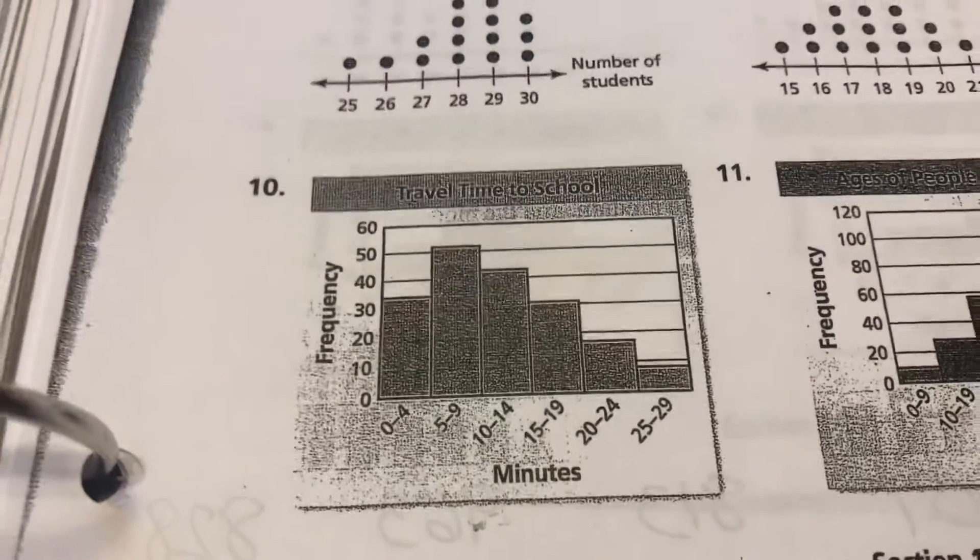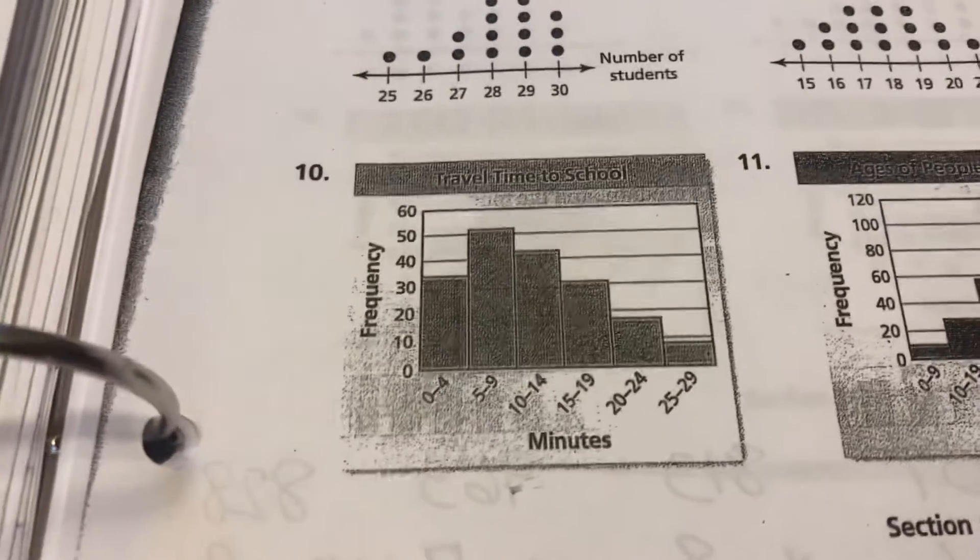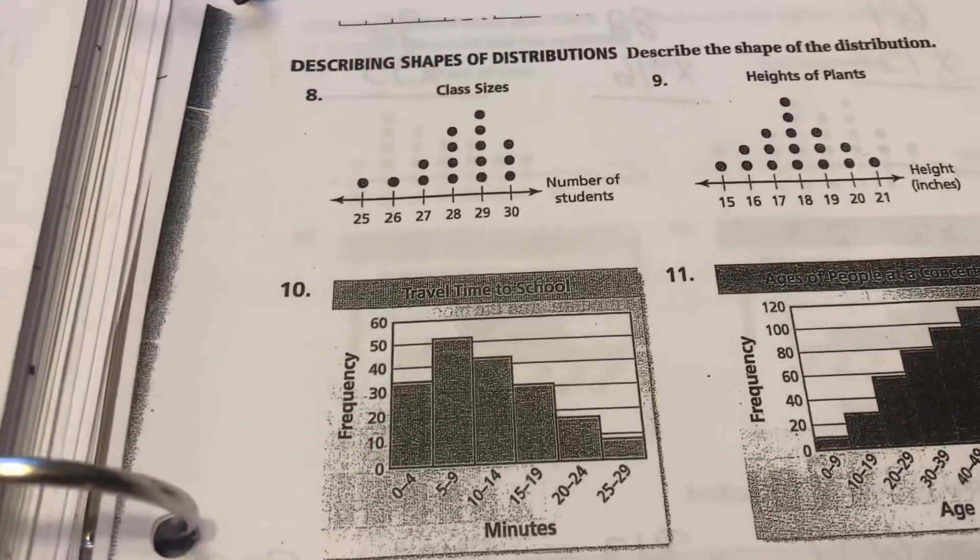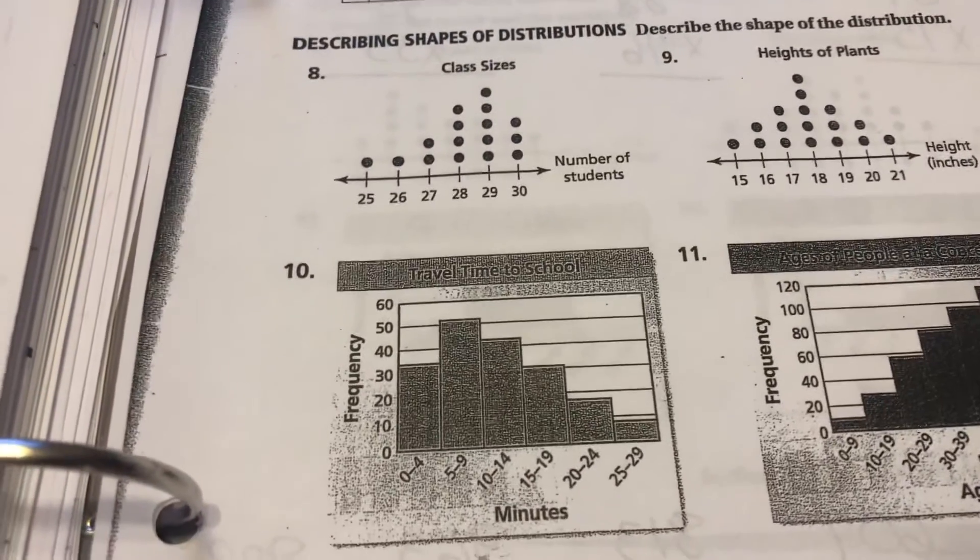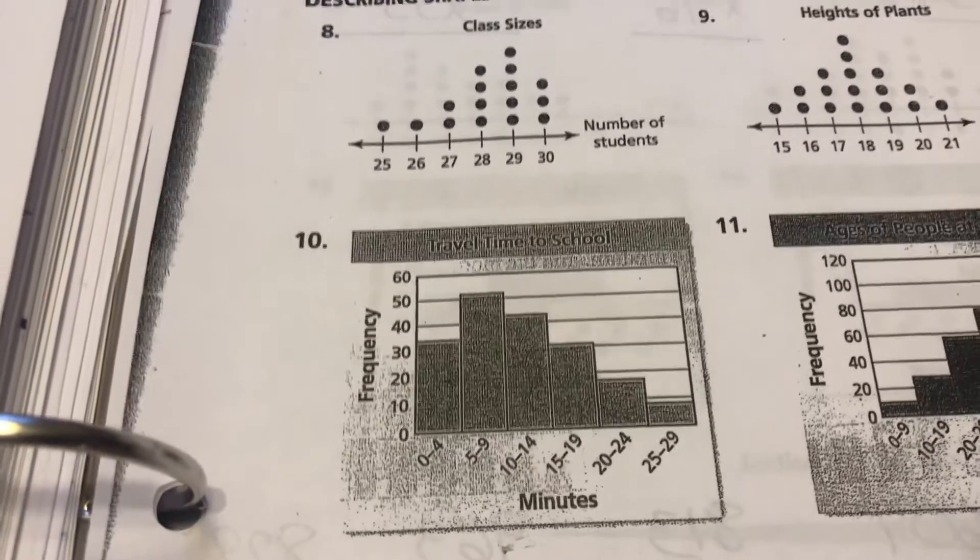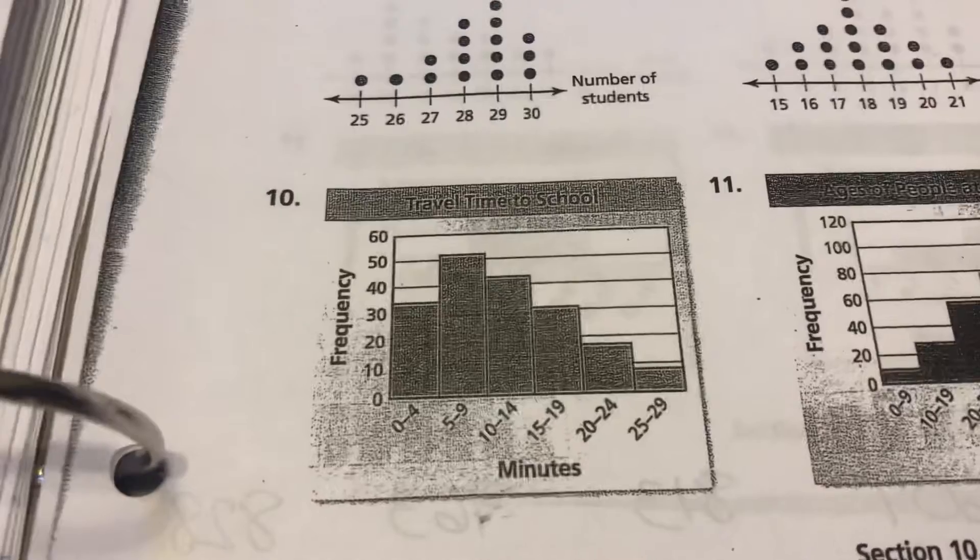So here's 10. Here, we're definitely skewed. As you can see, it goes up much higher here on the left, and then just kind of comes down. It's not a symmetric shape, so I would use the median to describe the center, and I would use the interquartile range to describe the variation.